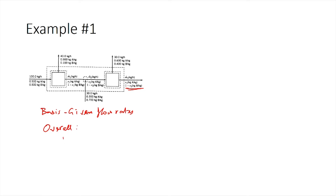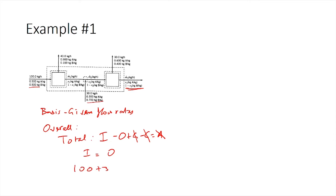For the overall system, we write a total balance: input minus output plus generation minus consumption equals accumulation. Assuming steady state, accumulation equals zero, and with no reactions, generation and consumption are zero, giving input equals output. The inputs are 100 kg/hr and 30 kg/hr; the outputs are 40, 30, 40, 30, plus M3-dot. Solving, we get M3-dot equals 60 kg/hr.